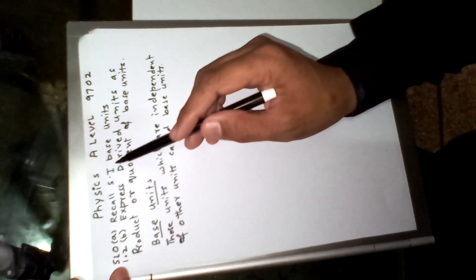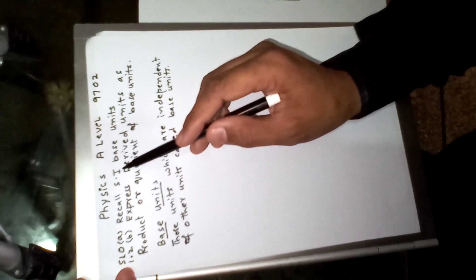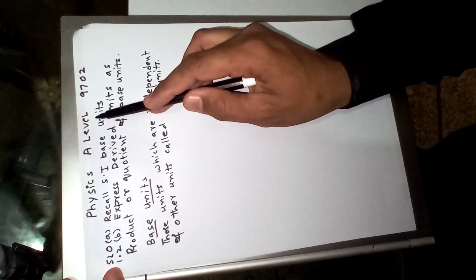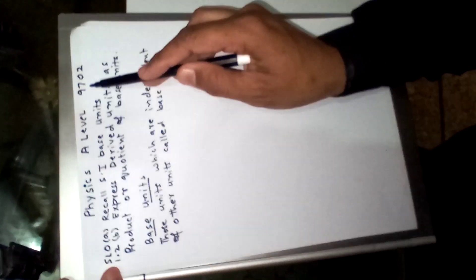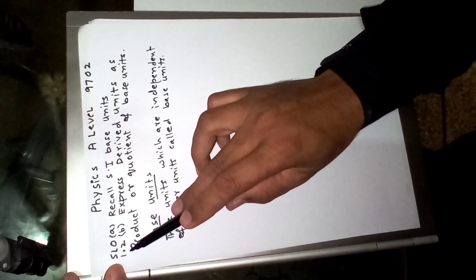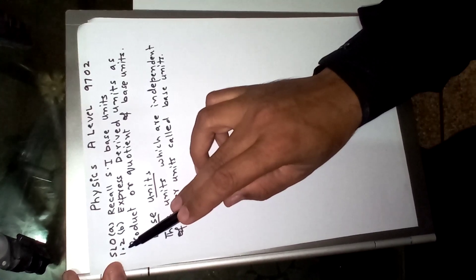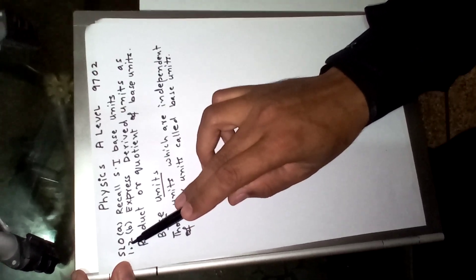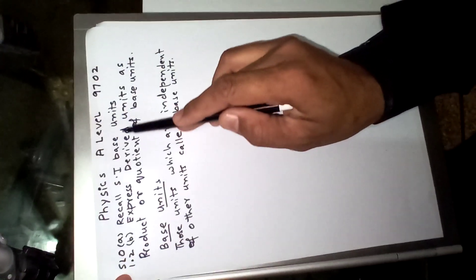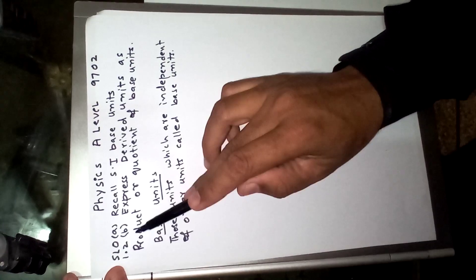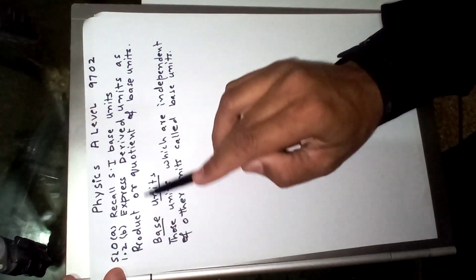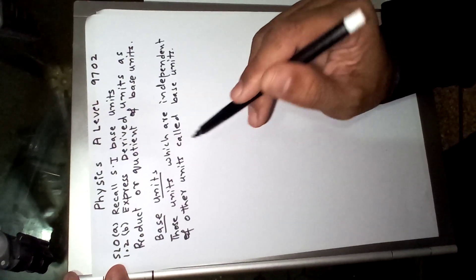Assalamu alaikum, my name is Haris Akeem and I am going to teach you Physics A Levels 9702, subtopic 1.2 SLO A: recall SI base units, and B: express derived units as a product or quotient of base units.